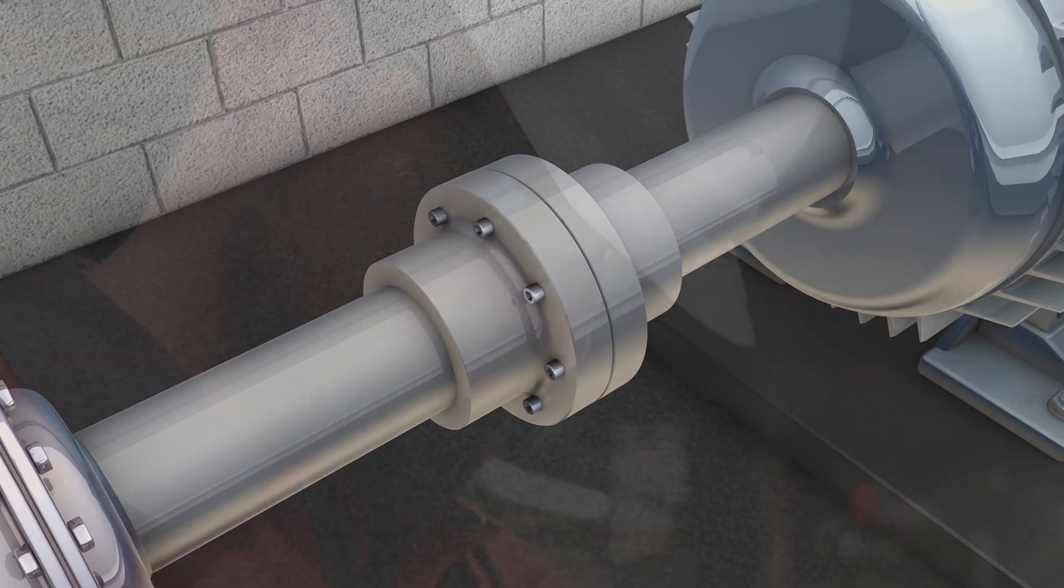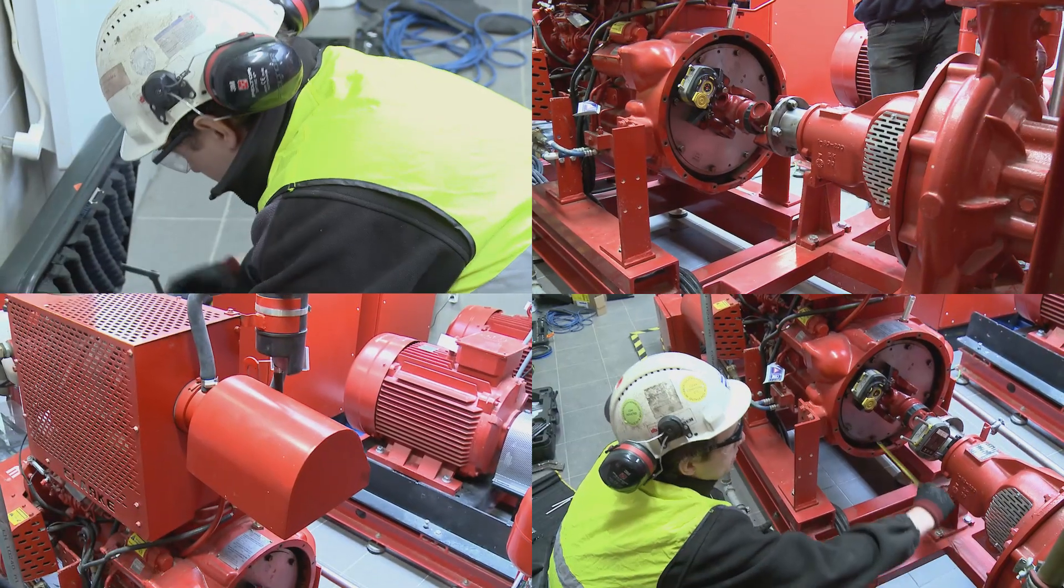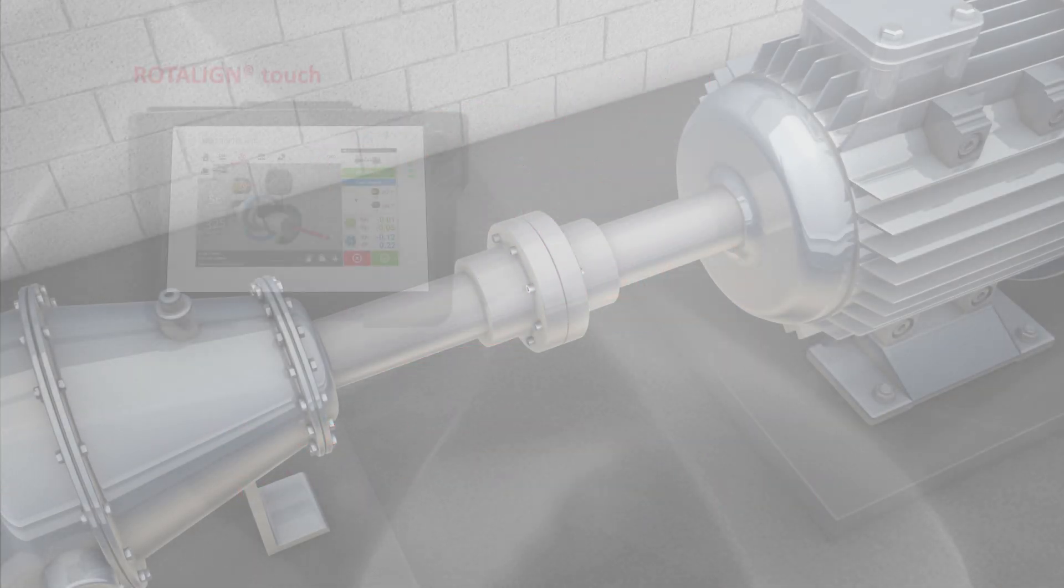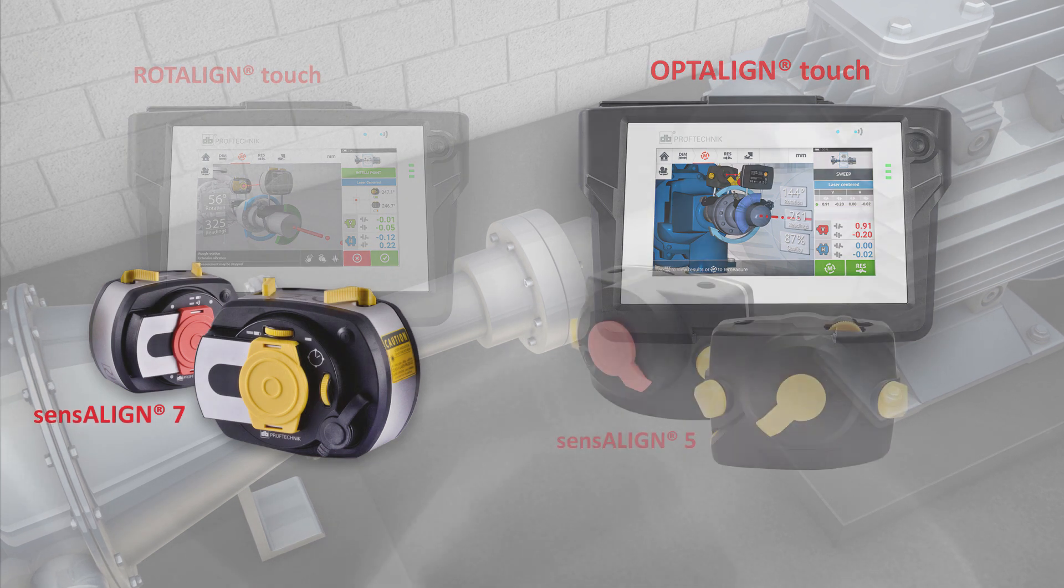Pruftechnik, the makers of ROTALIGN and OPTALINE, have been setting new standards in machine and shaft alignment for more than 35 years. Now it is time to introduce the cutting edge SensALIGN family.